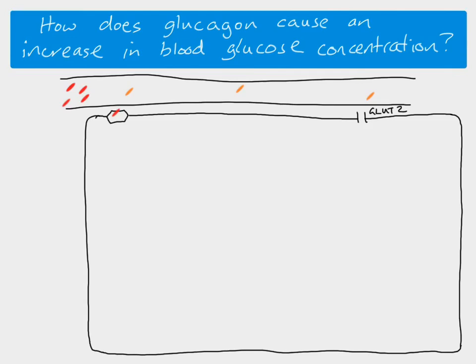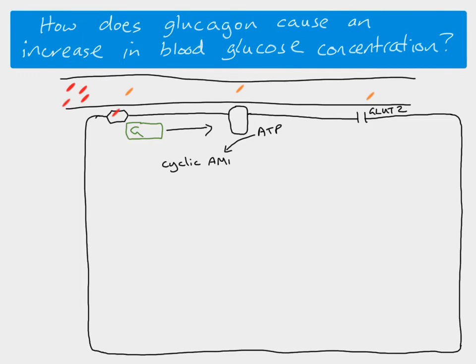When glucagon binds to the receptor on the liver cell, the first thing that happens is it causes a G protein to be activated. That G protein then activates a membrane enzyme, which converts ATP into cyclic AMP. This is the starting point of a whole series of reactions that will take place in the cell.